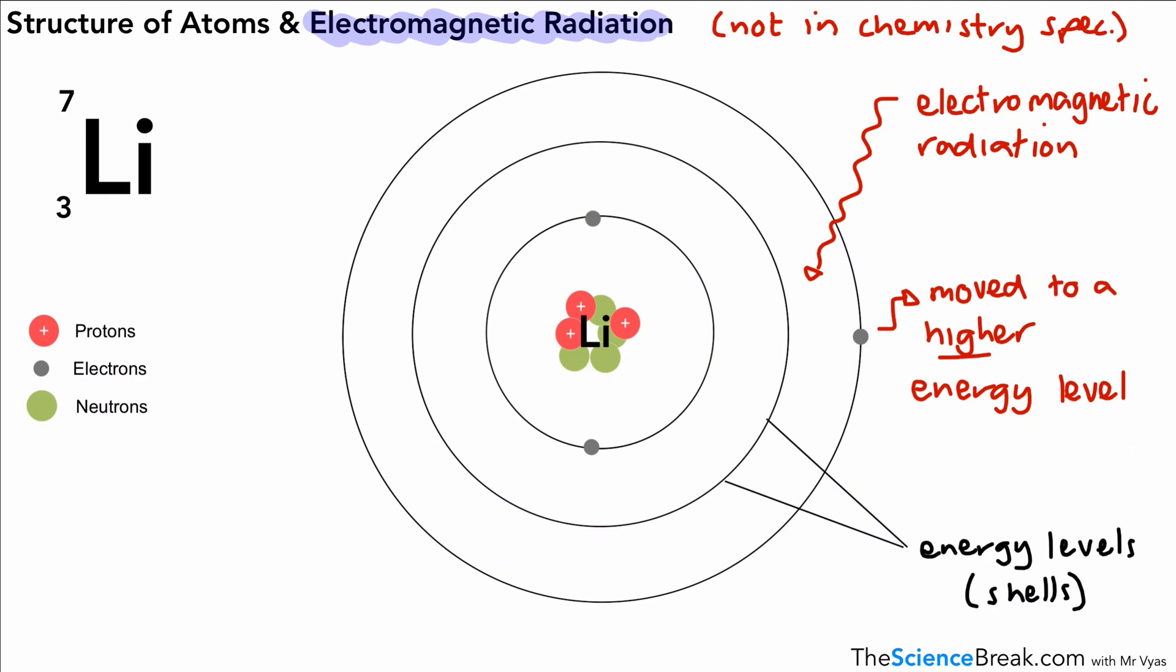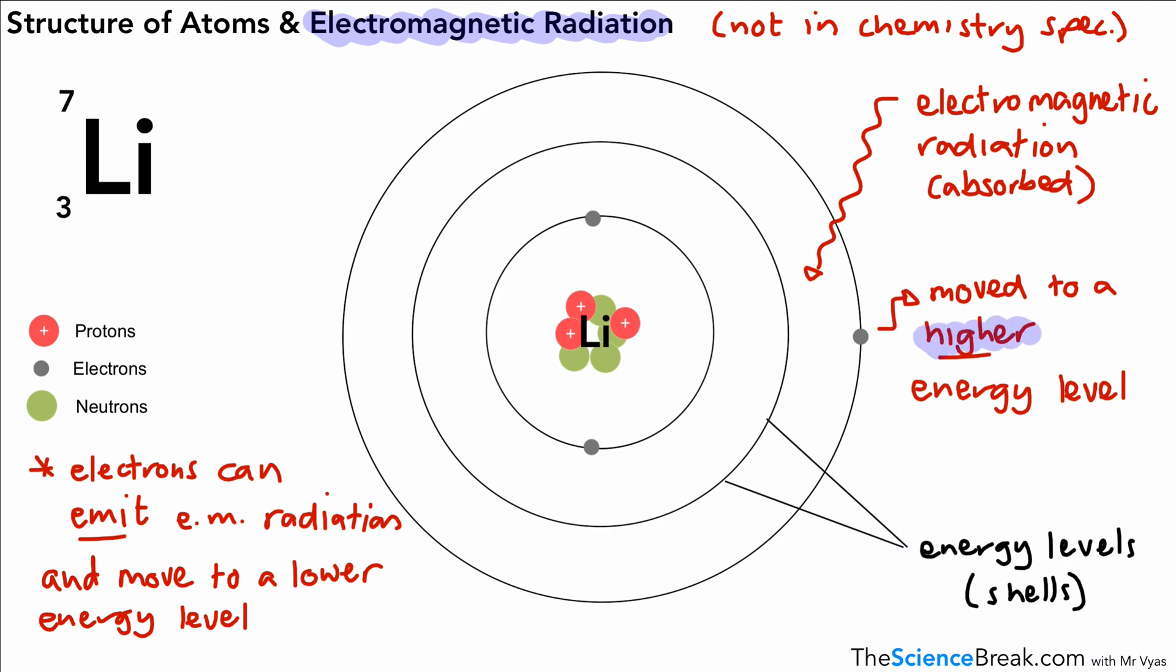But not only can we absorb electromagnetic radiation and move to higher levels, we can do the reverse as well. Electrons at higher energy levels can emit electromagnetic radiation as well. And when they emit electromagnetic radiation, they move to lower energy levels and therefore closer to the nucleus. So we can move closer to the nucleus or further away from the nucleus, depending on whether we absorb electromagnetic radiation or emit, in other words give out, electromagnetic radiation.